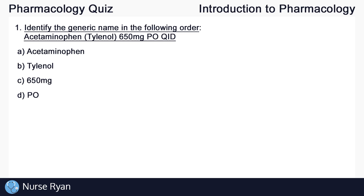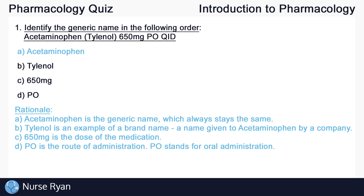For each question, I'll leave a few seconds for you to pause and think about the answer. A — acetaminophen is the right answer here. It is the generic name, which always stays the same. B — Tylenol is an example of a brand name, which is just a name given to acetaminophen that a company then sells as their own brand of the drug. C — 650mg is the dose of the medication, and D — PO is the route of administration. PO stands for oral administration.